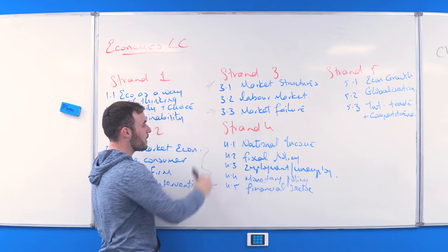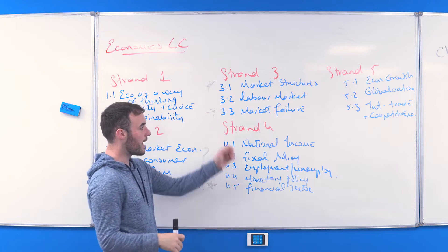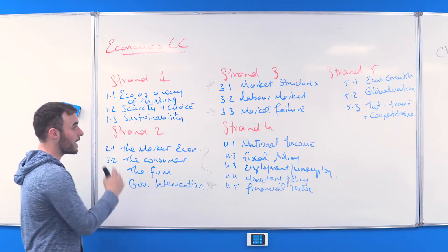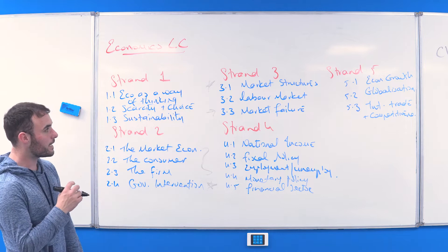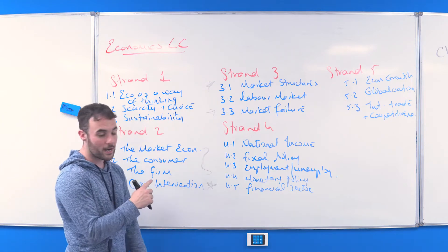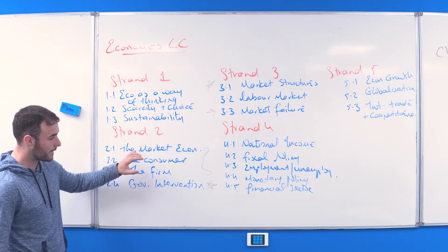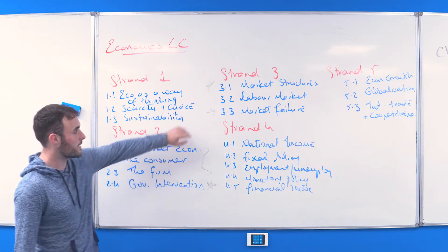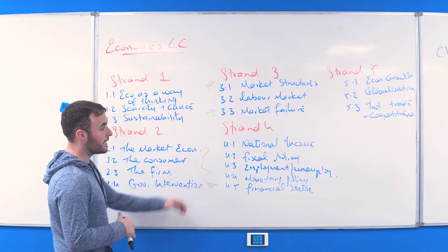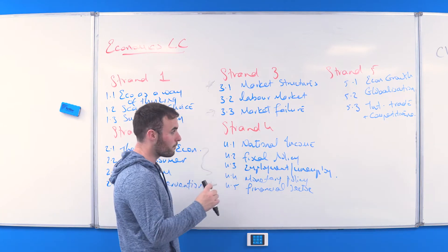Market failure was a big question asked last year — it's one of the new chapters and was asked heavily. That's basically your rundown on the micro course. Just make sure you are especially across these four chapters; there's definitely going to be at least one or two questions there, and market structures will be your bread and butter. At this stage you should be working through Strand Four.